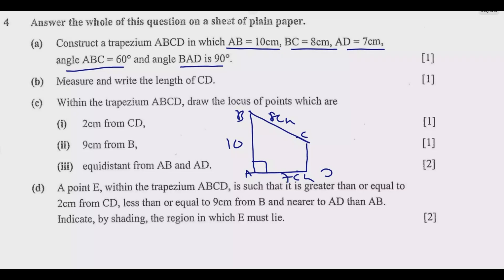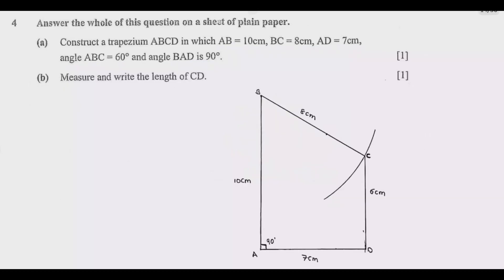For construction, like usual, you need a few things: you need a ruler, a protractor, and also a compass. So let us answer this question step by step. This is how the question will look when answered. Once you revise this question and understand the explanation, you should be comfortable to answer any construction question in an exam.